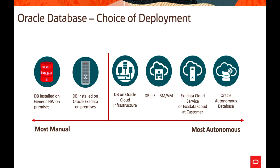All database cloud service packages include Database Transparent Data Encryption and Enterprise Manager packs, which include data masking, subsetting, diagnostic tuning, and real application testing. These come with the Enterprise Edition version of the software. High Performance adds multi-tenancy, partitioning, advanced compression, and Database Vault. Extreme Performance builds on High Performance by adding Real Application Clusters, Database In-Memory, and Active Data Guard.